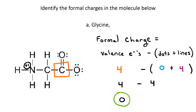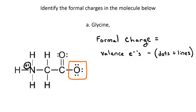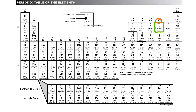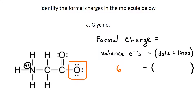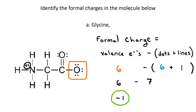How about the oxygen on the far right? Oxygen is in column 6A, so it has six valence electrons. There are six dots around that oxygen and one line. So the formula for formal charge gives us six minus seven, or a negative one charge on that oxygen.